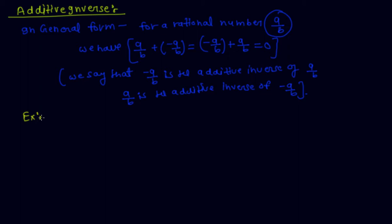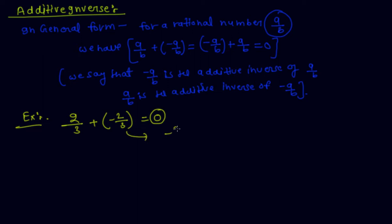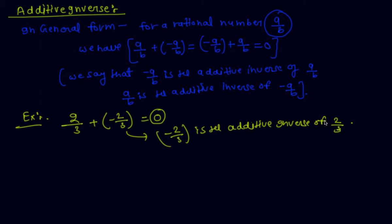Let's take an example. If 2 by 3 is a rational number and I add minus 2 by 3 to the given number, then the answer is 0. Since the answer is 0, minus 2 by 3 is the additive inverse of 2 by 3. So if anyone asks to find the additive inverse of a number, just add a minus sign or multiply by minus 1.